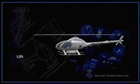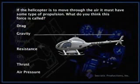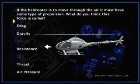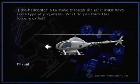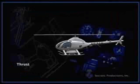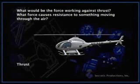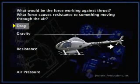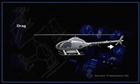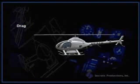If the helicopter is to move through the air, it must have some type of propulsion. What do you think this force is called? Right — the force that moves the helicopter through the air is thrust. And what would be the force working against thrust? What force causes resistance to something moving through the air? Yes — in an aircraft, anything that resists movement is called drag.